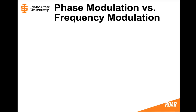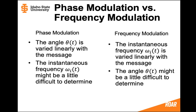Let's consider the difference between phase modulation and frequency modulation. For phase modulation, we will take the angle theta(t) and vary that angle linearly with the message. This means that if we want to find the instantaneous frequency, it might be a little difficult to determine, because we're going to have to perform a derivative. For frequency modulation, we're going to take the instantaneous frequency and change it linearly with the message, which means the angle might be difficult to determine because we need to perform an integral to find it.